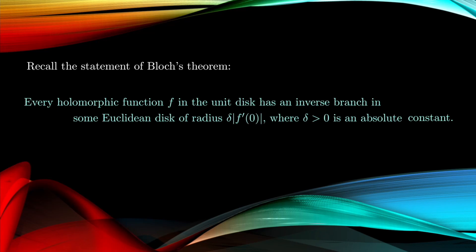Now let's recall the statement of Bloch's theorem: every holomorphic function in the unit disk has an inverse branch in some Euclidean disk of radius δ times the absolute value of f'(0), where δ is this absolute constant which we now call the Bloch constant.